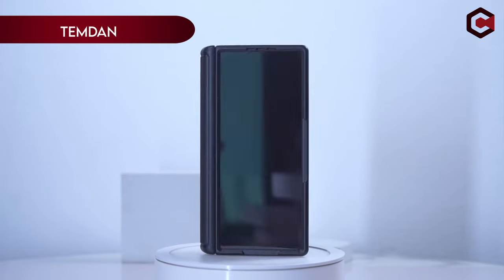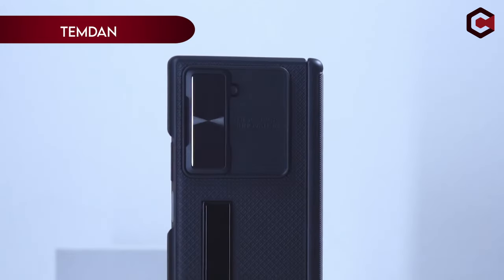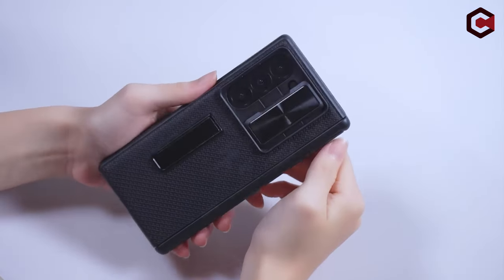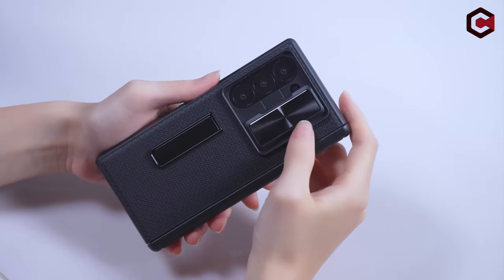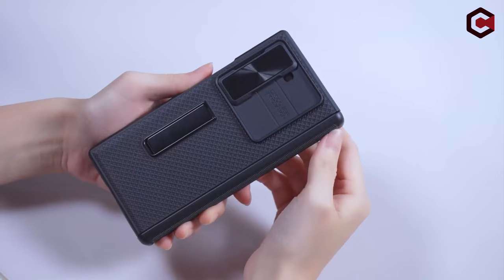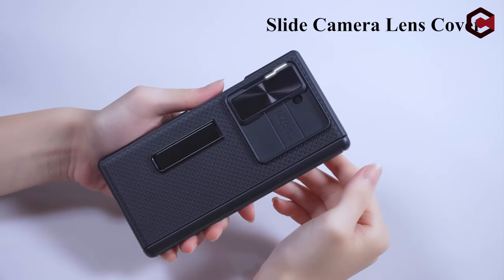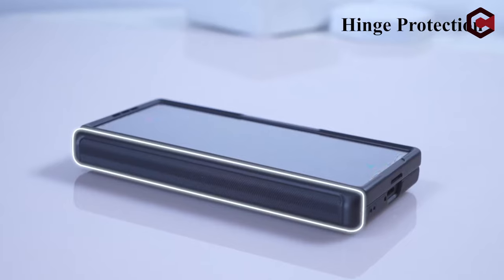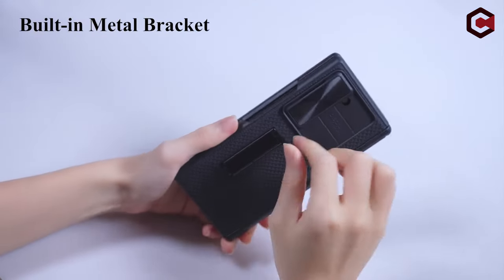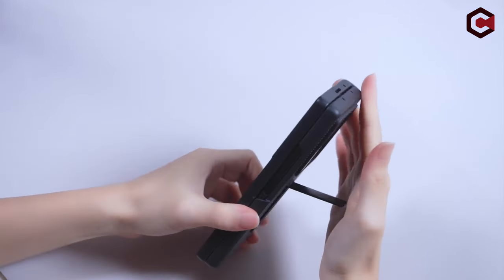On number 2, Temdan. Temdan's Samsung Galaxy Z Fold 6 case offers comprehensive protection and practical features. Designed specifically for the 2024 release, it includes a sturdy PC back cover and a TPU shock absorber frame. This construction, reinforced at the corners and hinge, disperses impact effectively, safeguarding against drops and collisions.